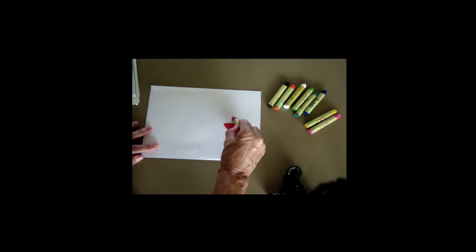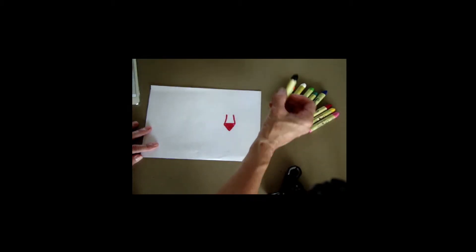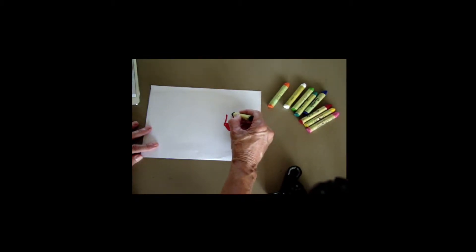We're going to make two standing up lines from the edge of his nose like a number 11. Then, if you want to change colors, you can. I'm going to make two rainbow lines up and over.